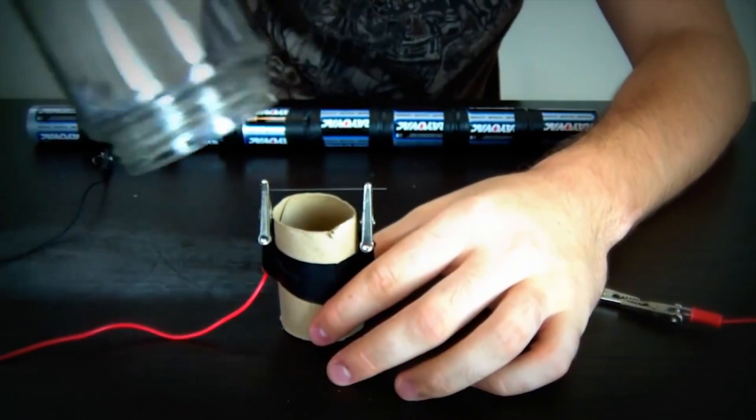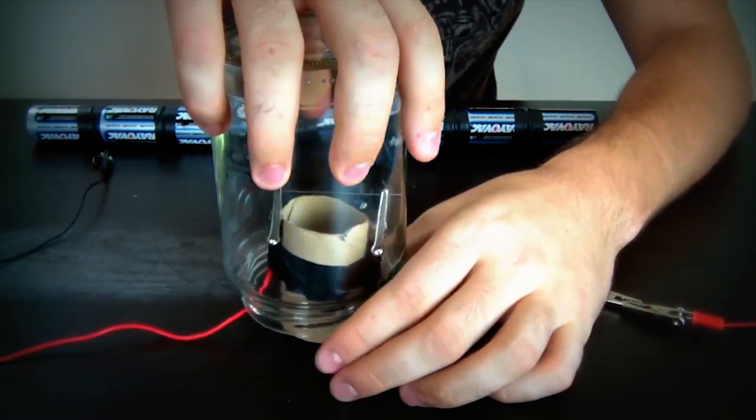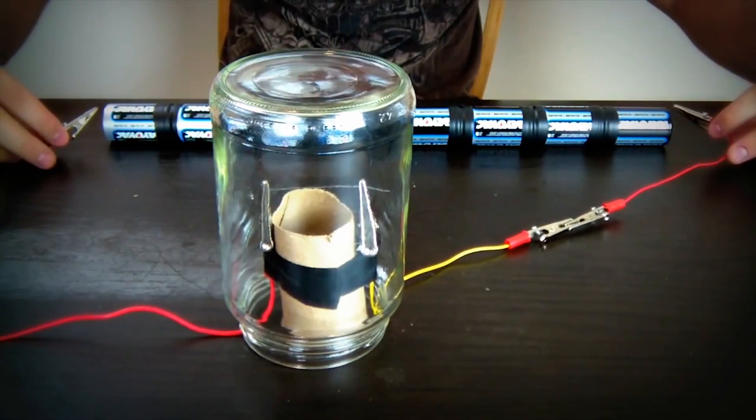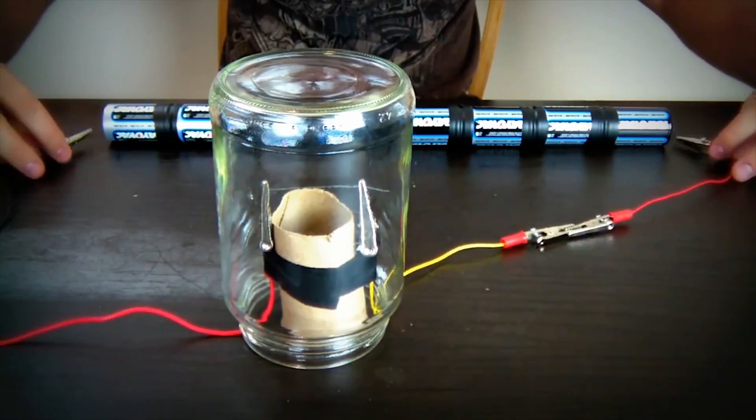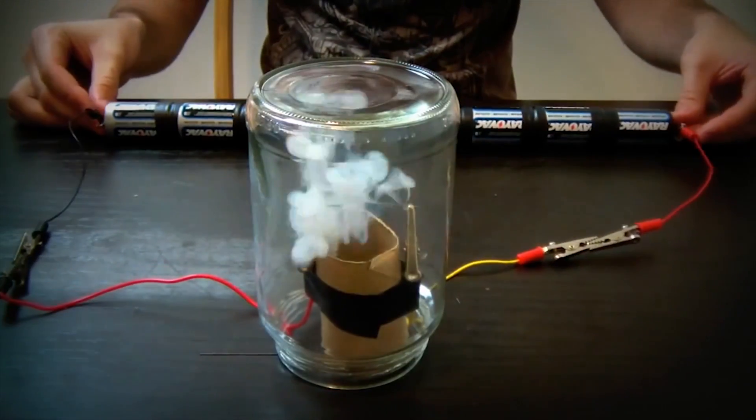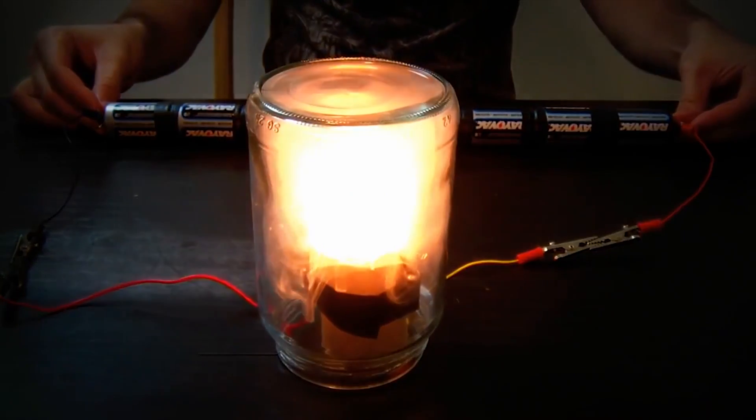Then we're gonna put a jar over it. And then we're gonna grab our other ends and plug it into the end of the battery. But first I'm gonna turn off the light. And then plug it in. And we got our light bulb.